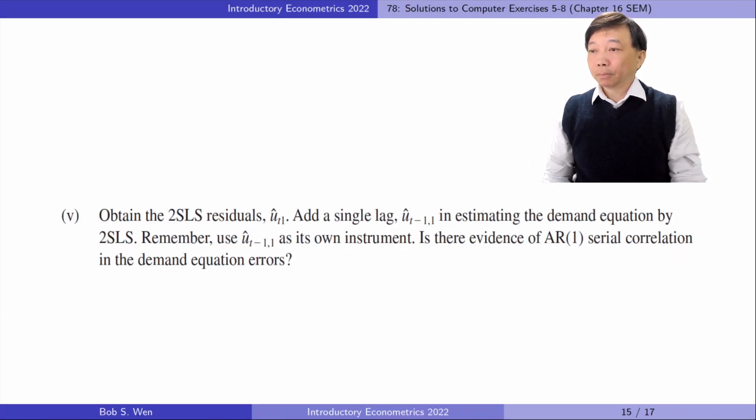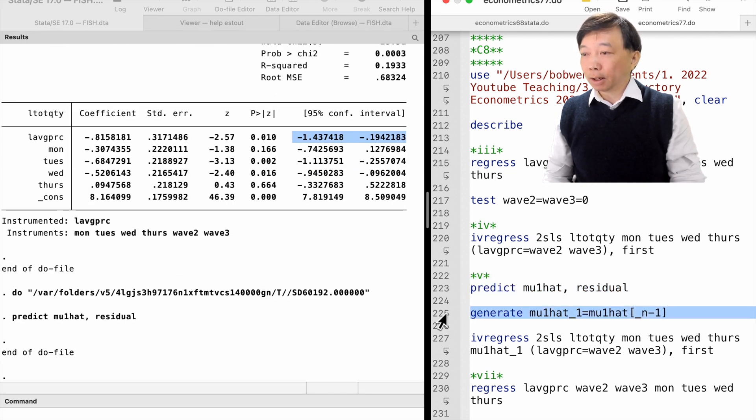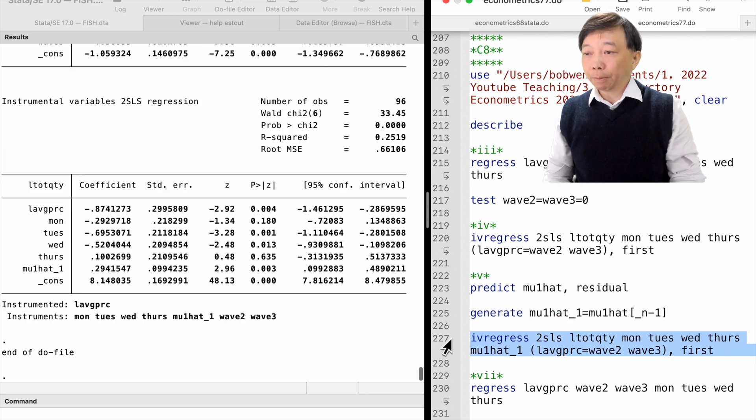In part 5, obtain the two-stage least squares residual mu 1 hat. Add a single lag mu 1 hat in t minus 1 in estimating the demand equation by two-stage least squares. Remember, use mu 1 hat in t minus 1 as its own instrument. Is there evidence of AR1 serial correlation in the demand equation errors? The estimated coefficient on the first lag of mu 1 hat is 0.294 with a p-value of 0.003. It is an evidence of an AR1 serial correlation.